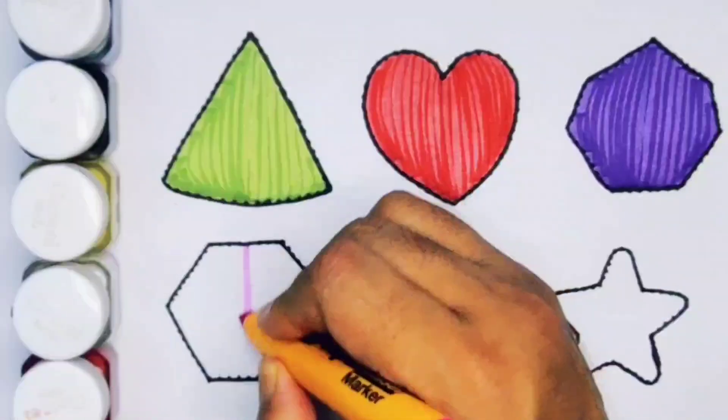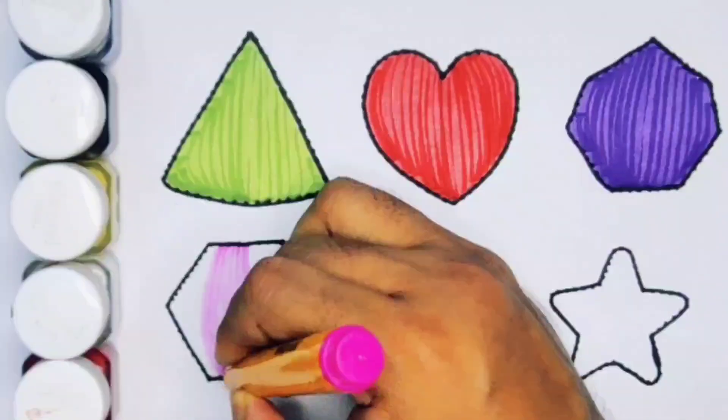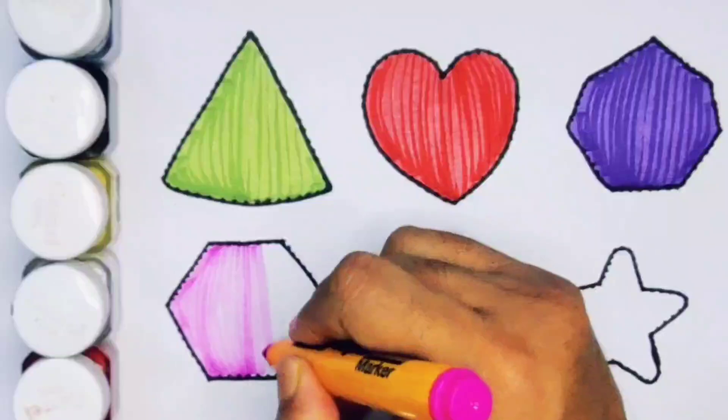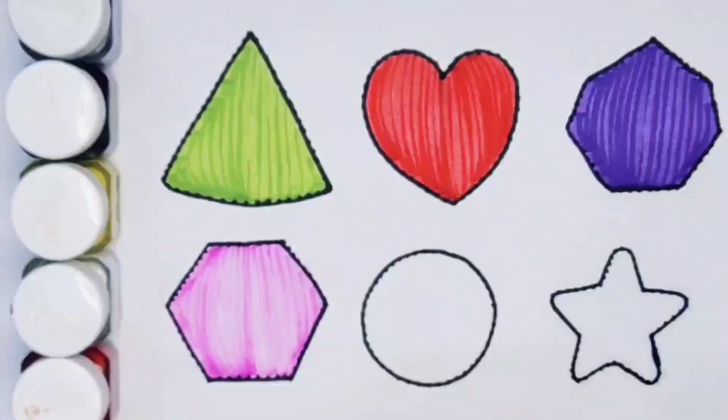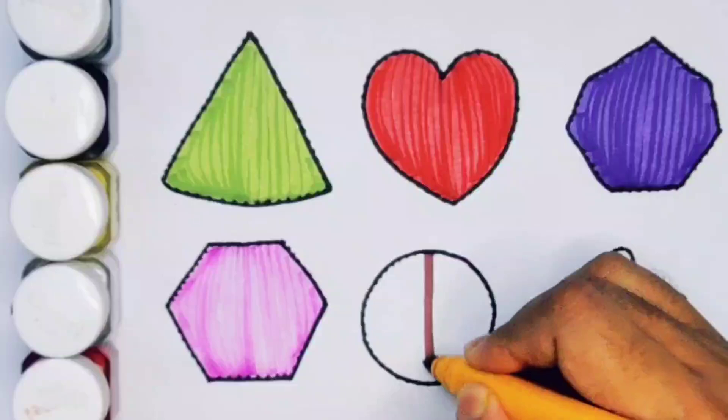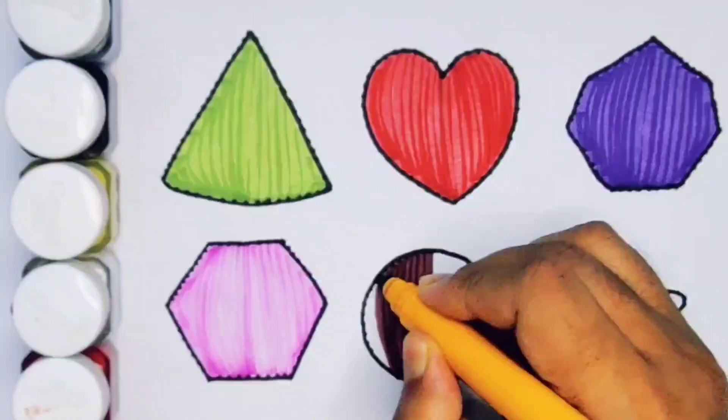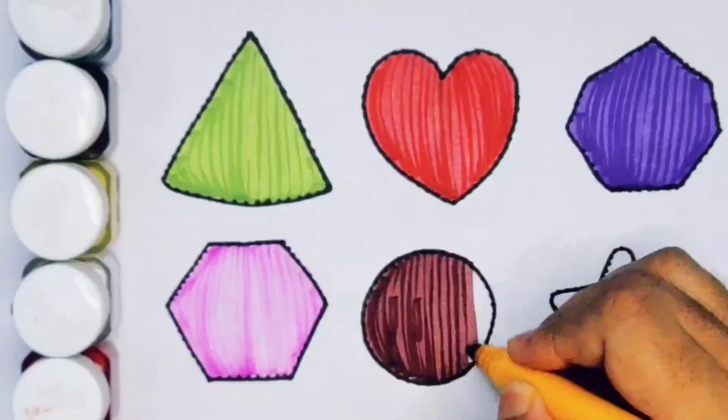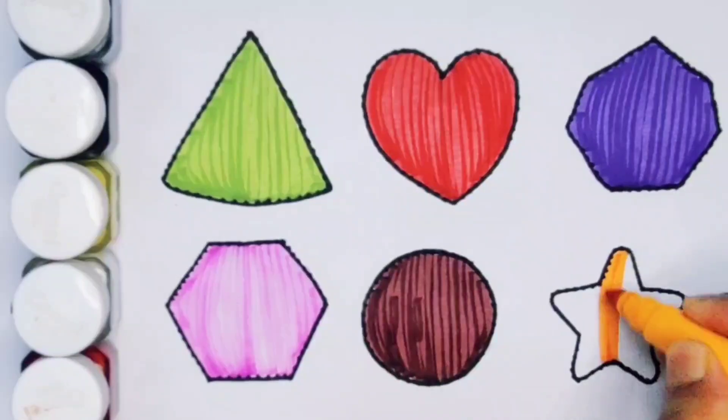Next, pink color, hexagon. Next, chocolate color, circle. Next, orange colored star.